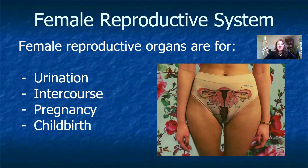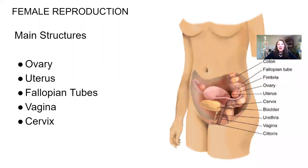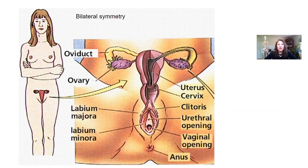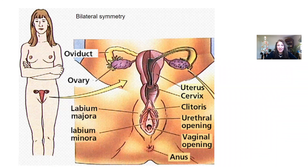With the female reproductive system, all of the organs involved are related to urination, intercourse, pregnancy, and childbirth. The five main organs we'll focus on are the ovary, uterus, fallopian tubes — very commonly called the oviducts — the vagina, and the cervix. Every individual differs by about 10% from any given individual in their species, so this is what we call quote-unquote normal anatomy. We do see typical bilateral symmetry, so everything on the left is mirrored on the right. There are two ovaries in females connected by oviducts or fallopian tubes.